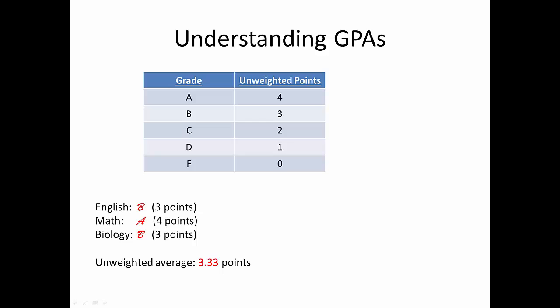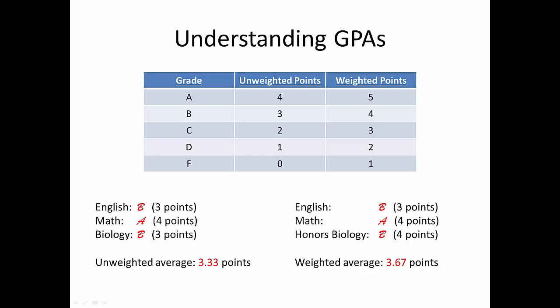In a weighted GPA system, however, the number of points a student earns towards the GPA depends on the course they earned the grade in. Usually this means giving extra points for students who are in advanced courses, like honors or AP classes. So if our hypothetical student earned one of their B's in an honors biology course, the school may give them 4 points instead of 3, because earning a B in honors biology takes about as much effort as earning an A in a regular, non-honors course.